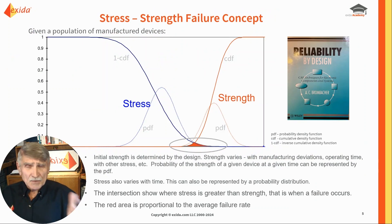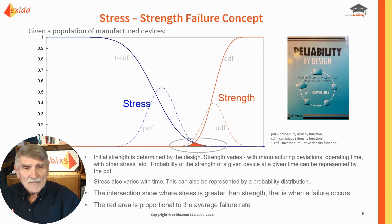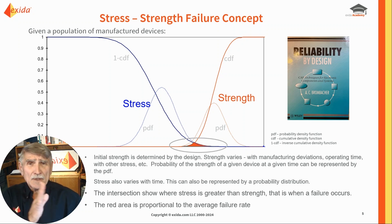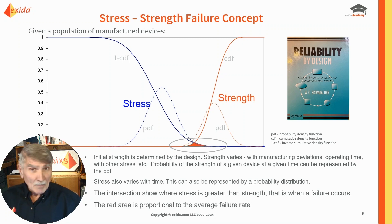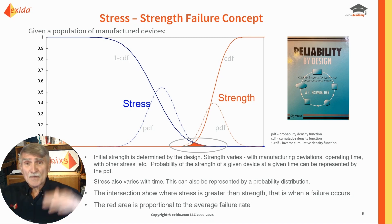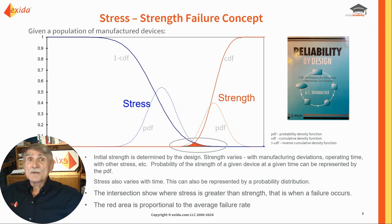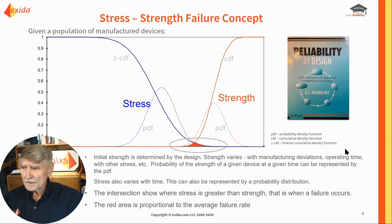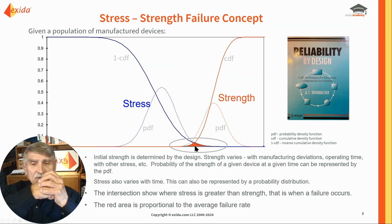We use the stress-strength concept as our principle thought mechanism. The idea is any manufactured population will have some variation in its strength, and that can be characterized by a probability distribution. Likewise, the environmental stress, which varies all over the place, can also be characterized by a probability distribution. Failure occurs when the stress is greater than the strength.